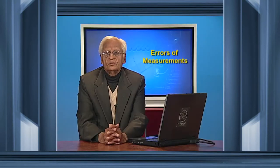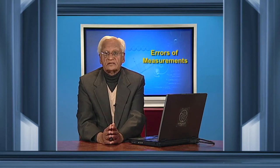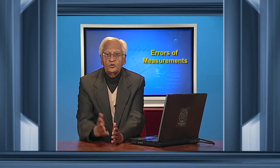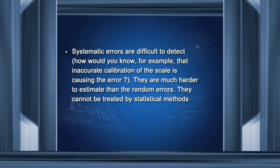Systematic errors shift the result only to one side — the result is either always higher than the actual value or always lower than the actual result. Random errors, which we shall see presently, can shift the result to either side. Systematic errors are difficult to detect; for example, you may not know that the calibration of the scale is not correct. Therefore, systematic errors are much harder to estimate than random errors and cannot be treated by statistical methods.